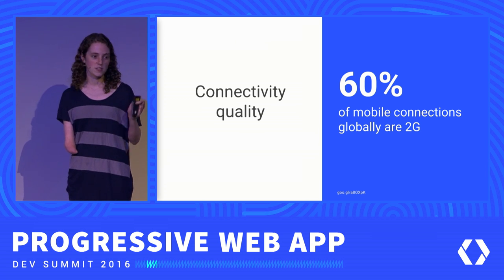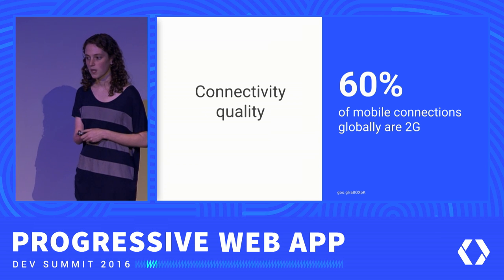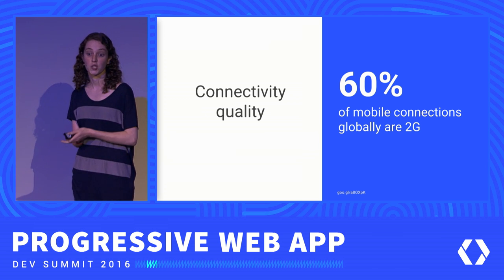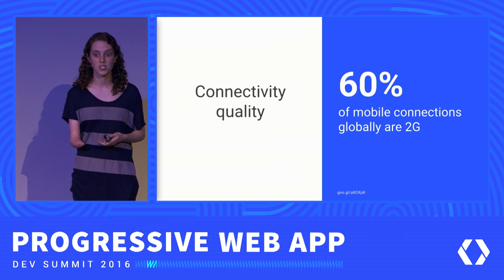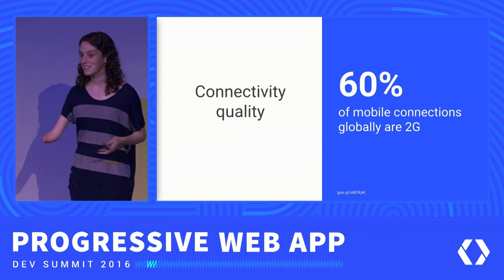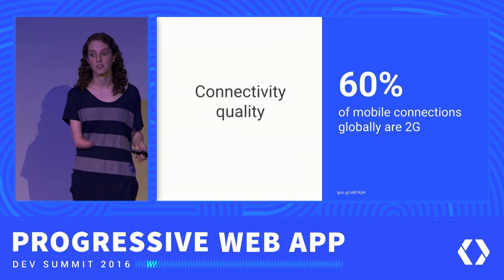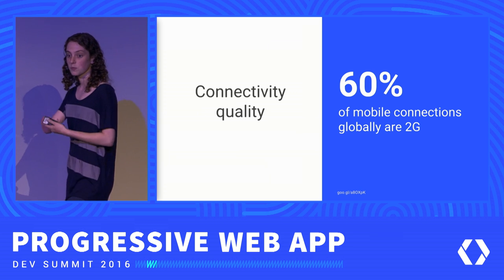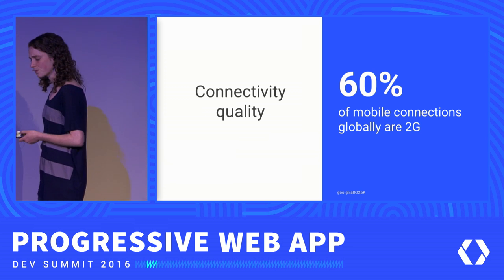While we're seeing this decreasing, we're not seeing it decrease at a very fast rate. The predictions, if you estimate it out, are that by 2020, one fifth of the connections globally will still be 2G — and again, this is still excluding 2G-like speeds. So the problem of connection speed is going to persist for the foreseeable future.